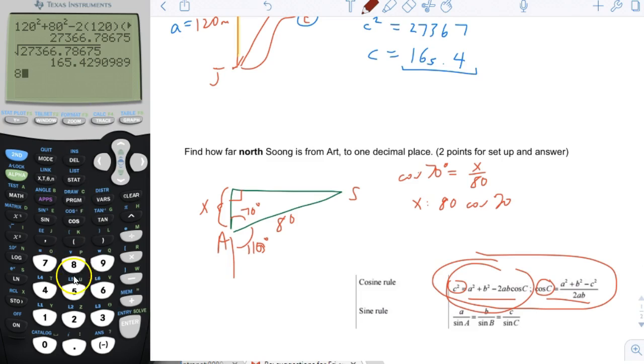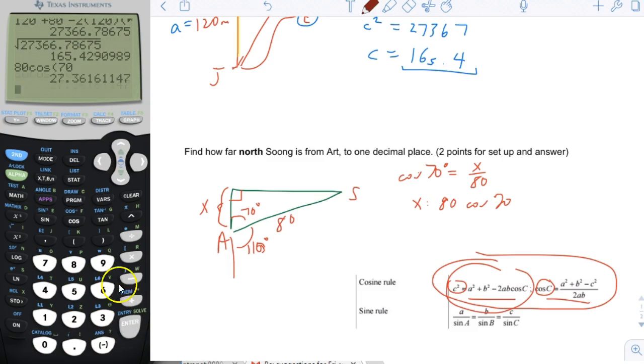I'm going to go to my calculator. Type that in. And I get 27.4. So the distance here is 27.4 meters. And that's it. Actually, this was just a right triangle problem, wasn't it?